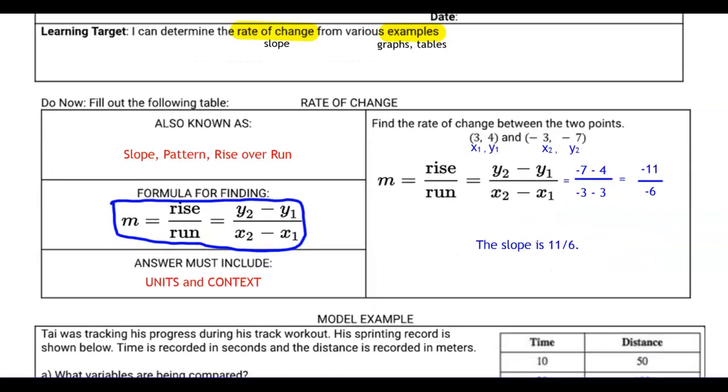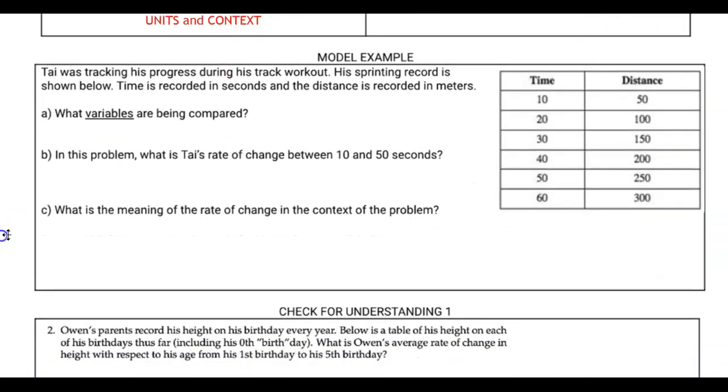All right, moving on to the first model example here. Ty was tracking his progress during his track workout here. His printing record is shown here. Time is recorded in seconds. So after 10 seconds, he ran 50. It says the distance is recorded in meters, 50 meters. And then after 60 seconds, he ran 300 meters.